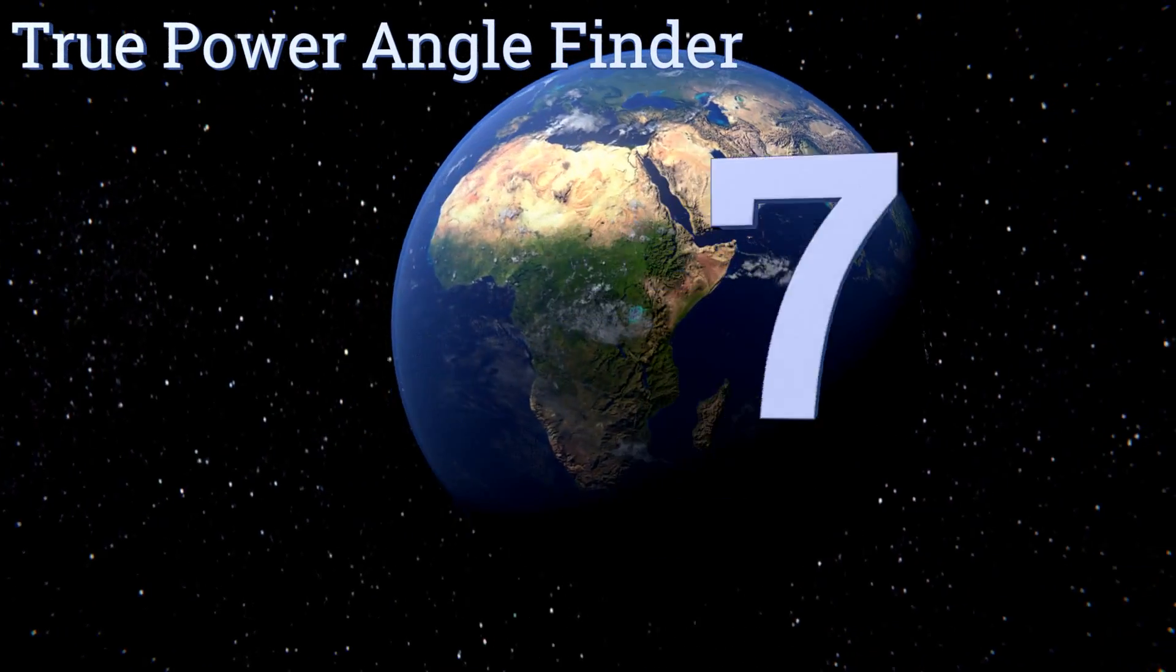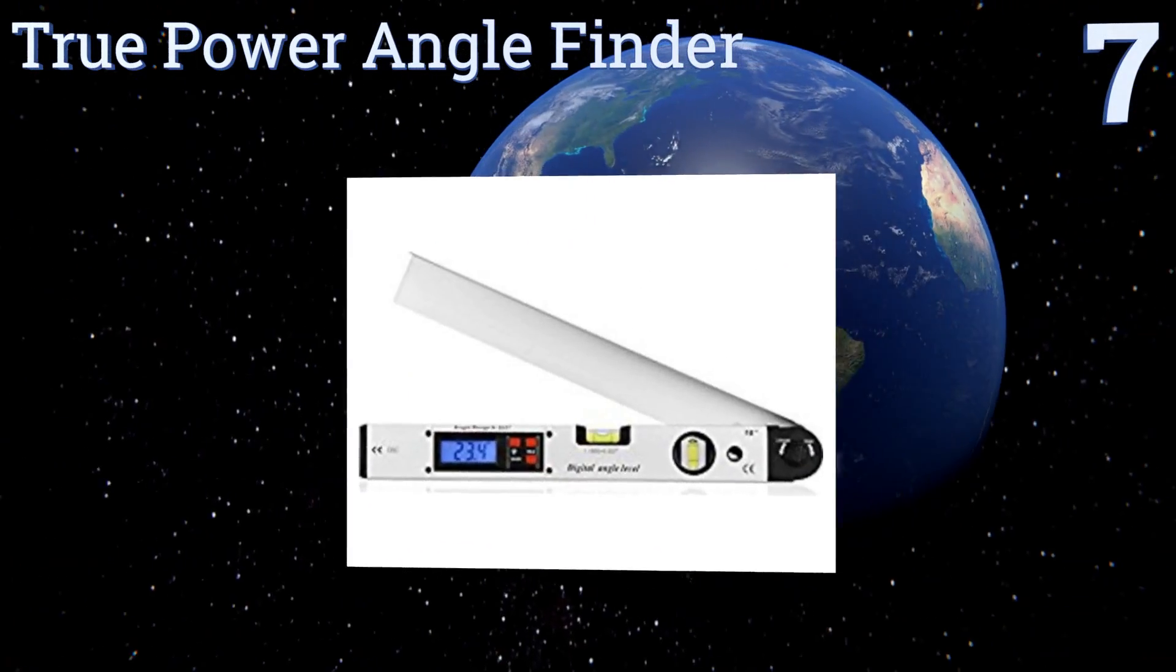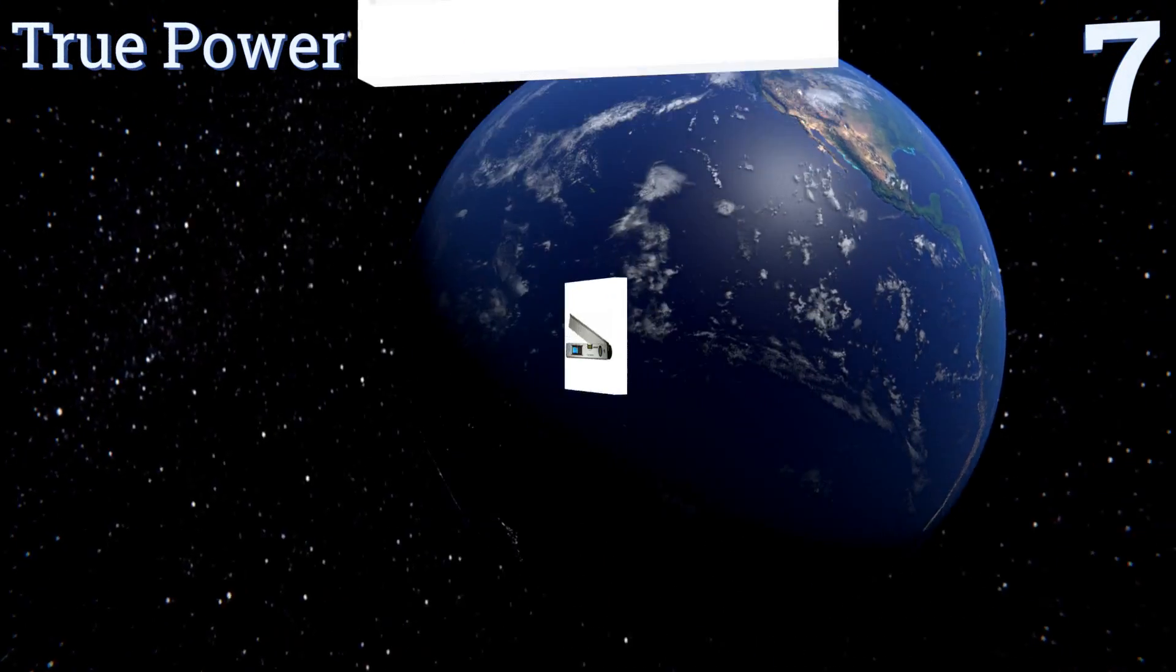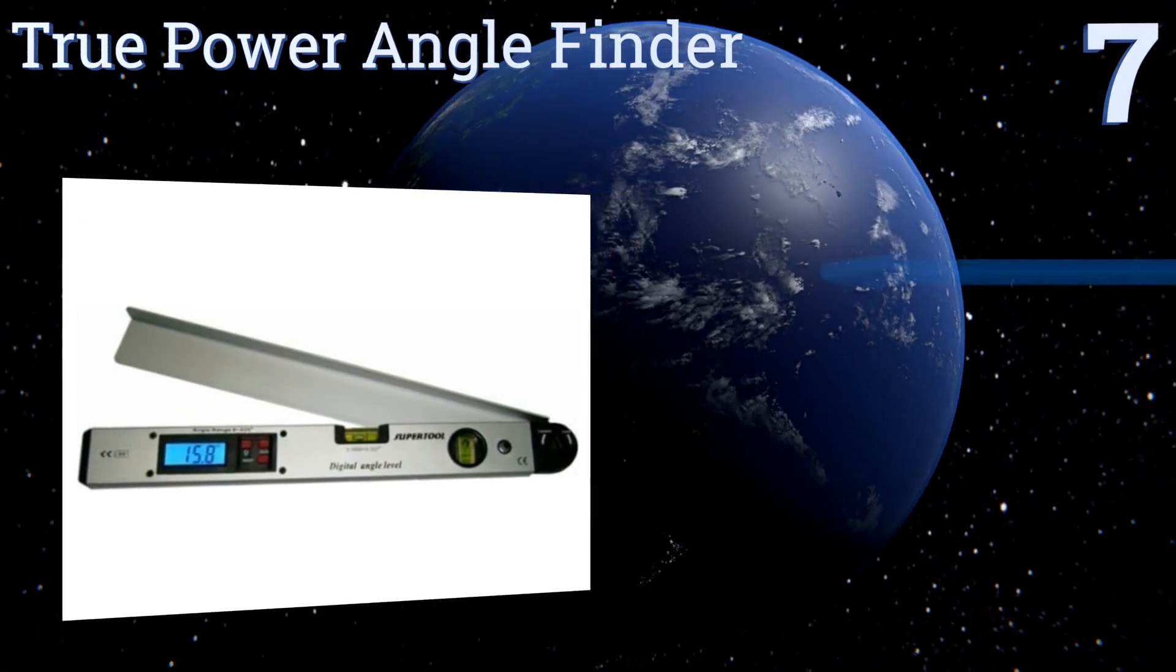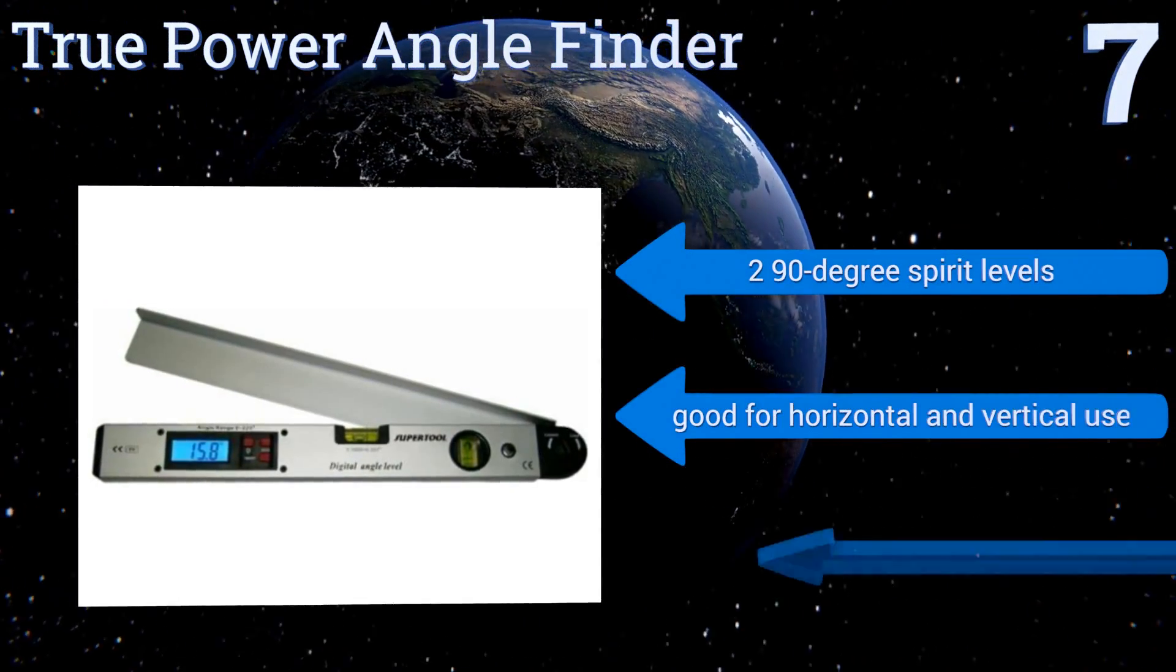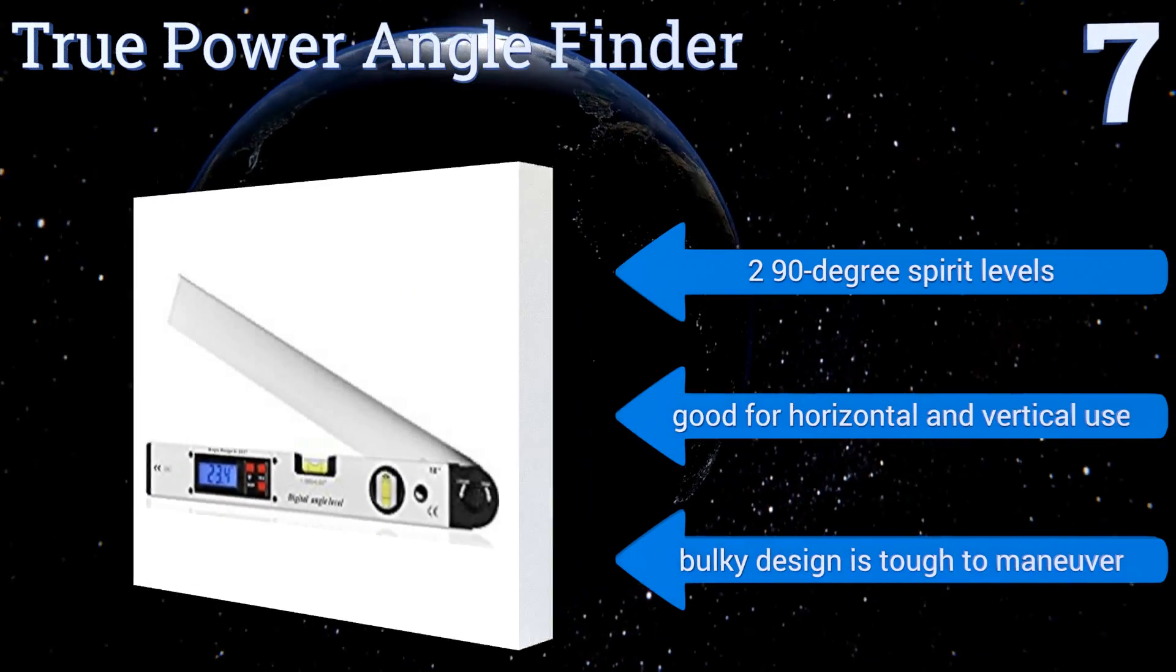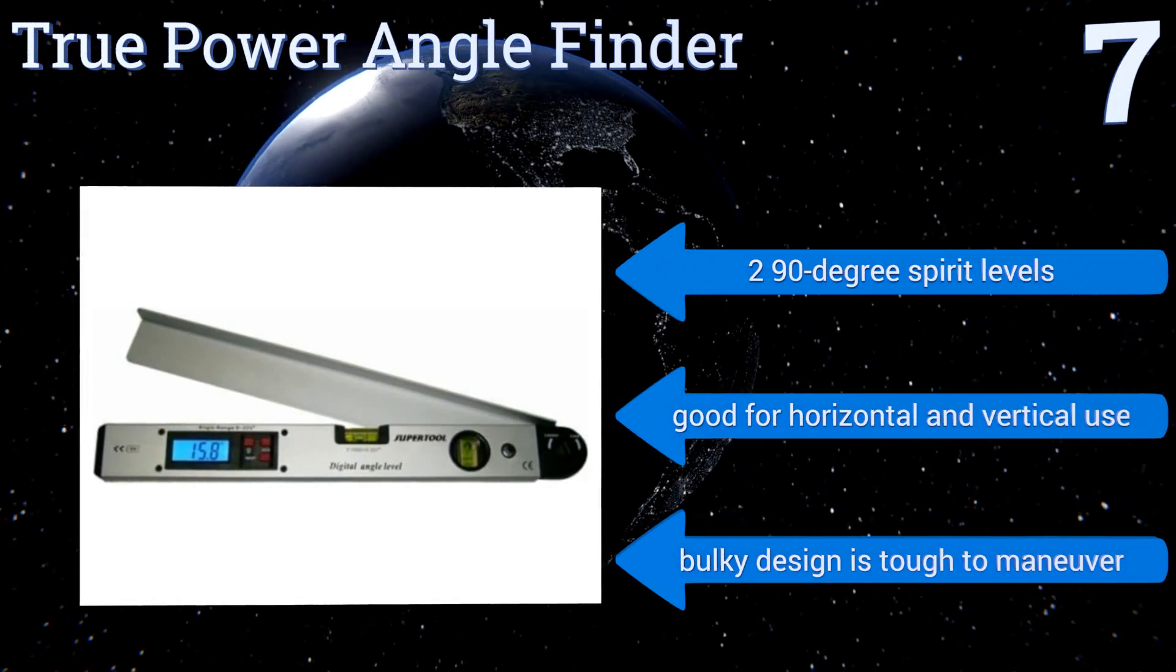At number seven, with a length of 16 inches, the TruePower Angle Finder offers a fairly wide measuring angle range of 0 to 225 degrees. It features a convenient hold function which freezes measurements so that they're easier to record. It includes two 90 degree spirit levels and is good for horizontal and vertical use, but its bulky design is tough to maneuver.